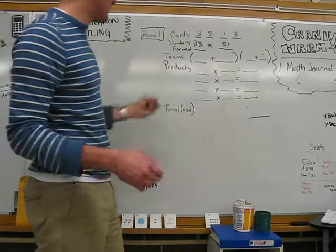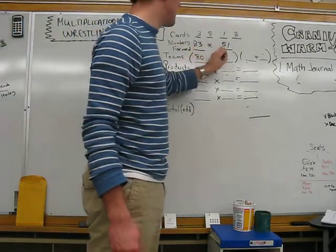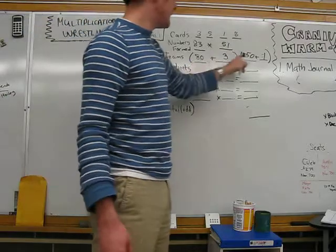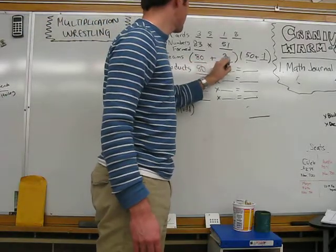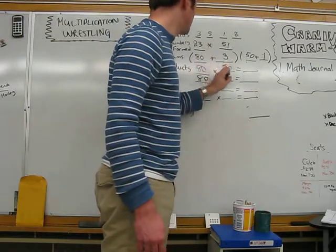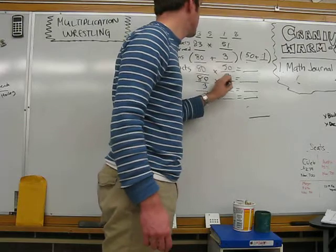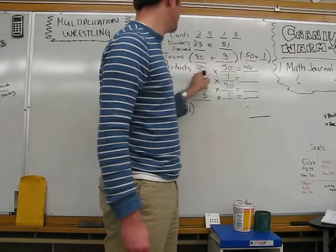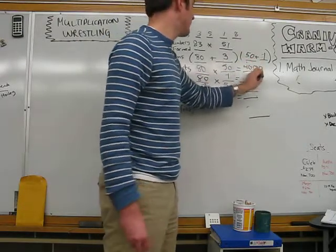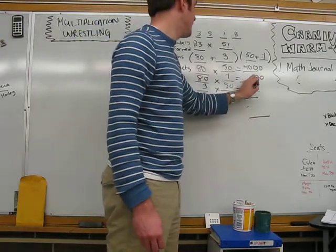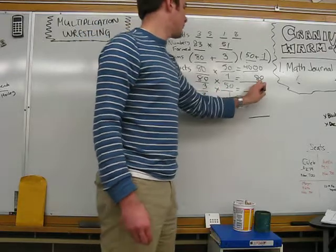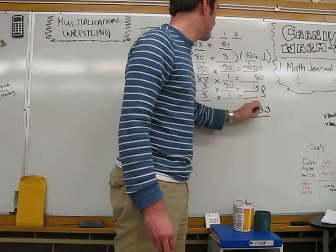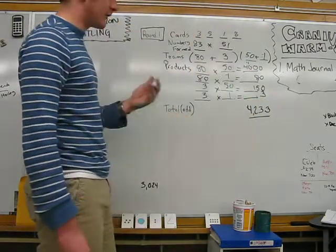So let's try 83 and 51. That's pretty good. 83 becomes 80 and three. That's my first team. 51 is 50 and one. Now we're going to wrestle these. 80 times 50 - eight times five is 40, add your two zeros. 80 times 1 is 80. 3 times 5 is 15, add your zero. 3 times 1 is 3. Add them up. We have 3, 13, 2, and 4. Our product is 4,233.